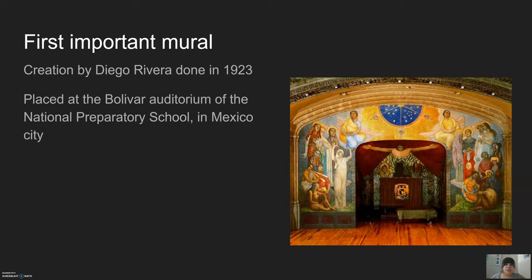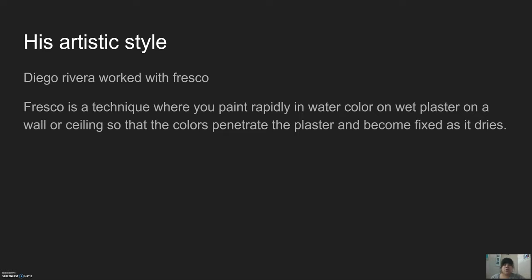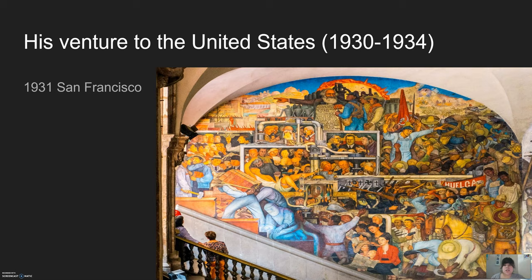As with many of his other paintings, he used a technique called Fresco. When using Fresco, you use wet plaster along with watercolor. You paint on it rapidly so that once it dries, the color penetrates onto the plaster and becomes fixed.